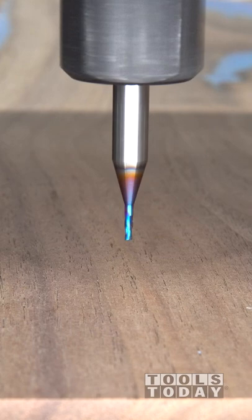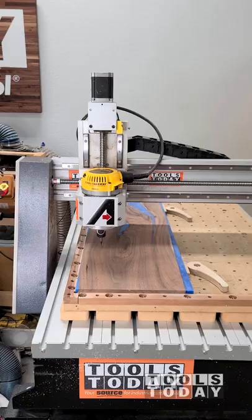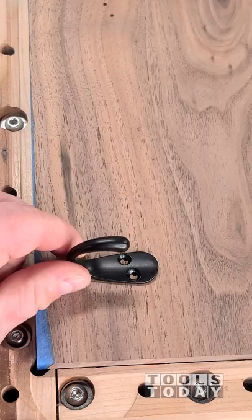So using the 46233-K 1/16th inch down cut bit on the Axiom AR8 CNC machine, we can get everything pocketed out at the exact screw locations that we need for all of these hooks.